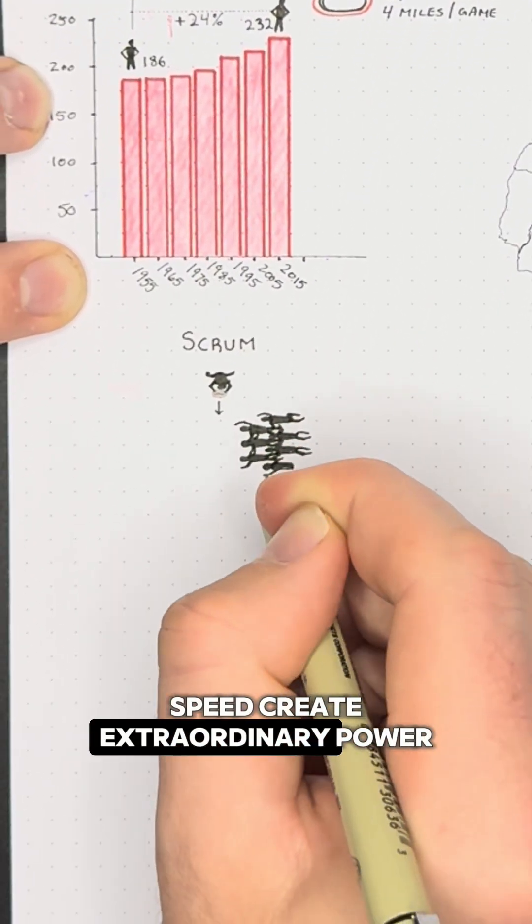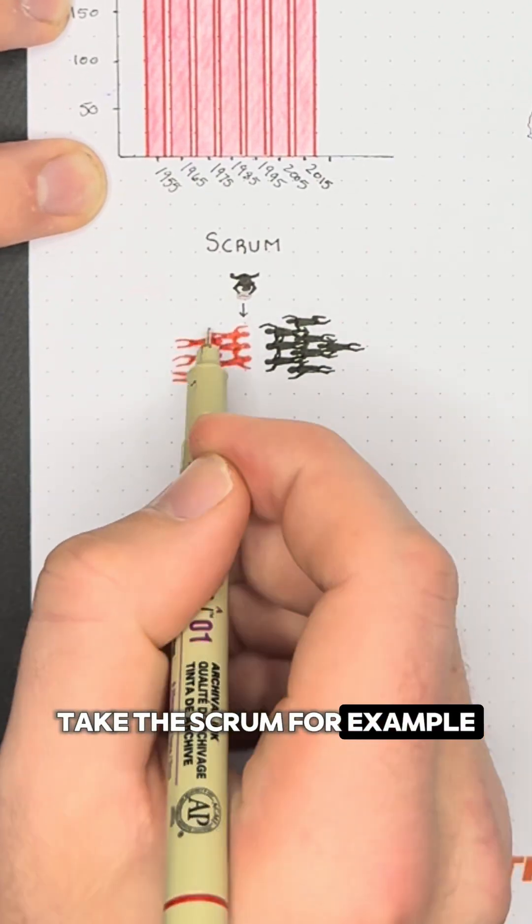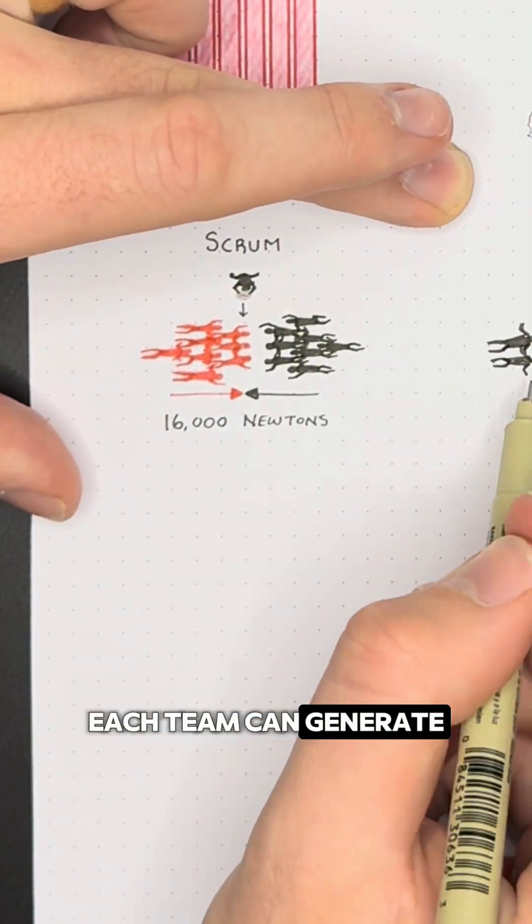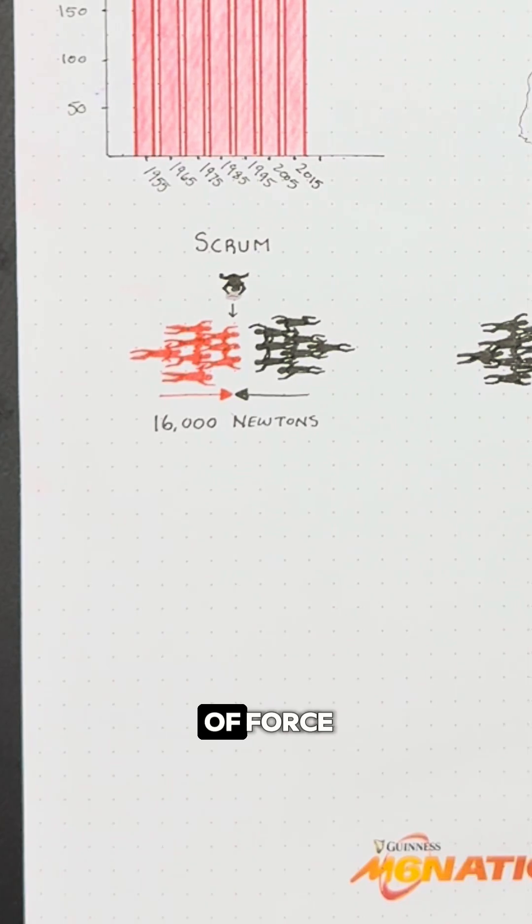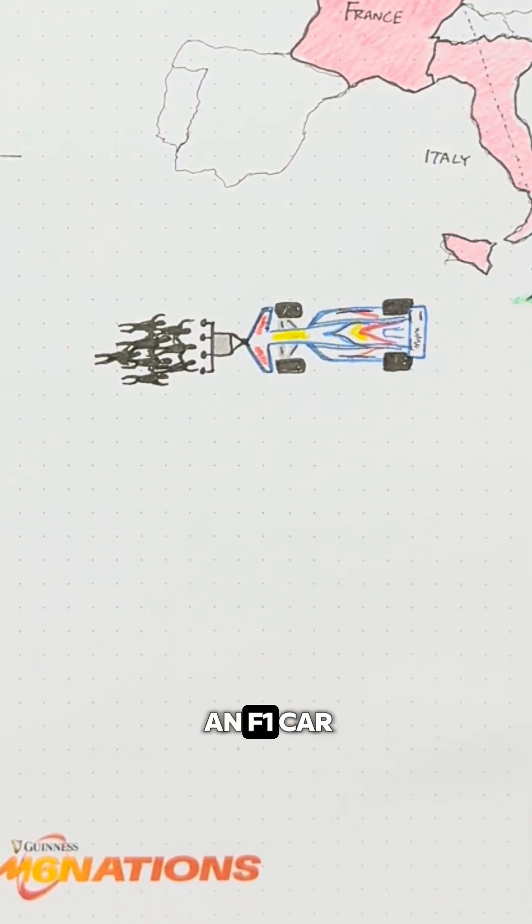And that size and speed create extraordinary power. Take the scrum for example. At the point of contact, each team can generate up to 16,000 newtons of force, enough to famously rival an F1 car.